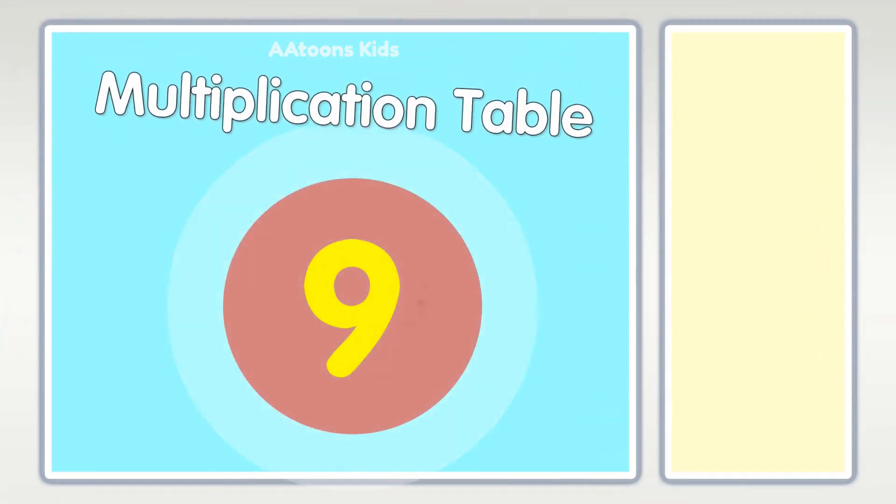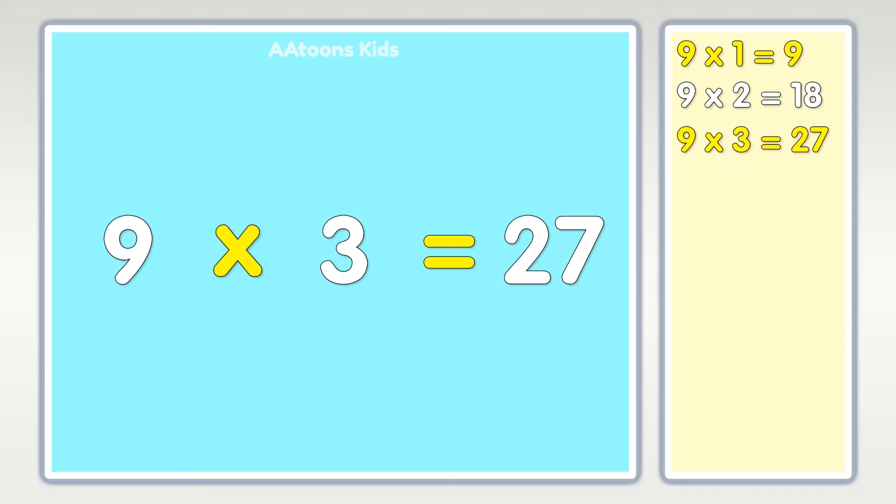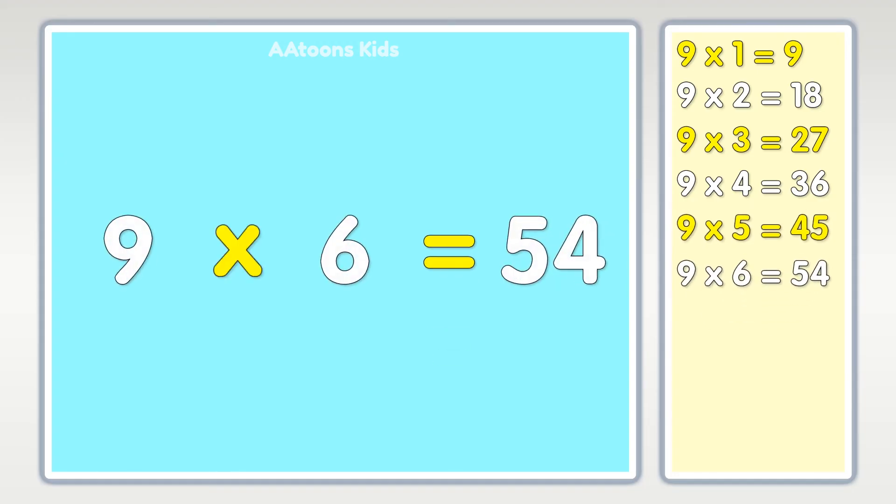Table of nine: nine times one is nine, nine times two is eighteen, nine times three is twenty-seven, nine times four is thirty-six, nine times five is forty-five, nine times six is fifty-four.